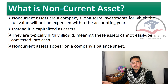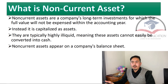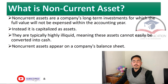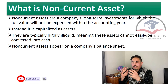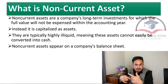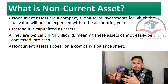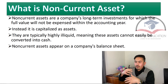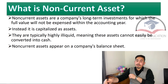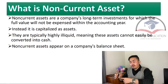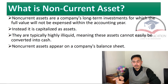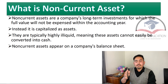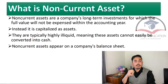What are non-current assets? Non-current assets are assets for which the full value will not be expensed within the accounting year. Instead, they are capitalized as assets. For the nature of a non-current asset, you are not going to record it as an expense — it will be capitalized because it is a long-term investment. Another name given is fixed assets. They are typically highly illiquid, meaning these assets cannot be easily converted into cash.